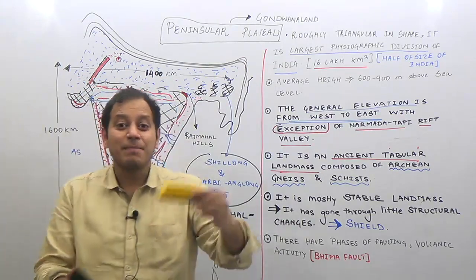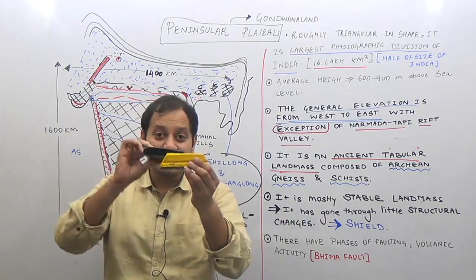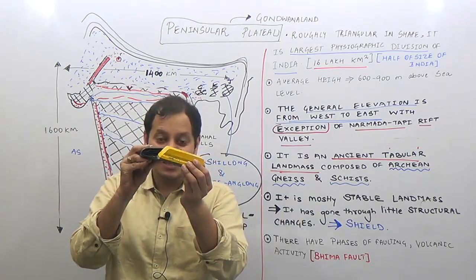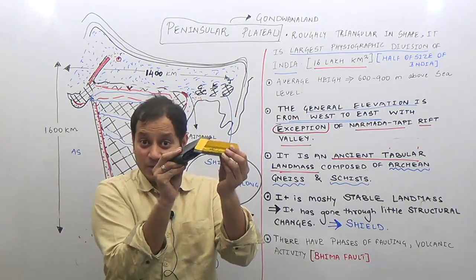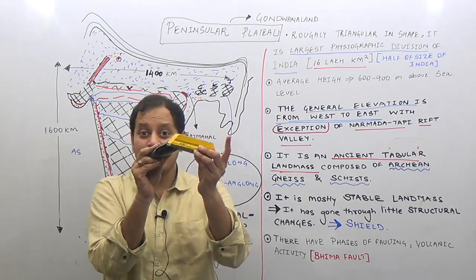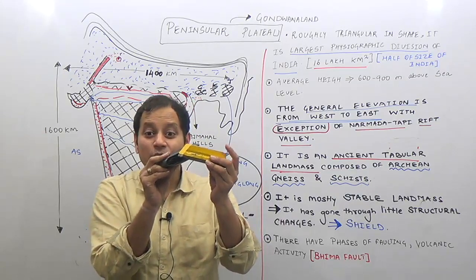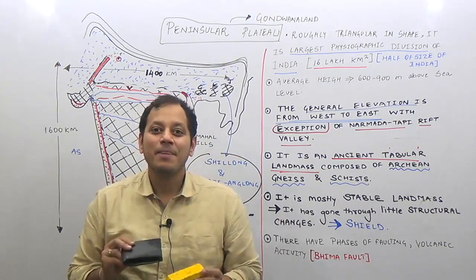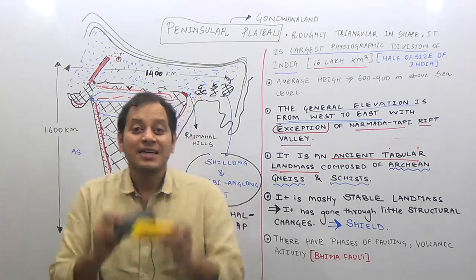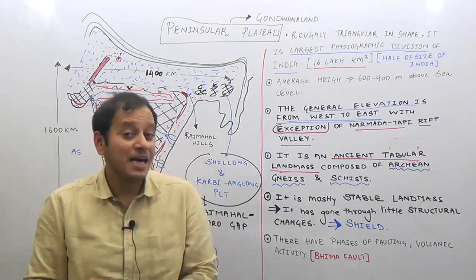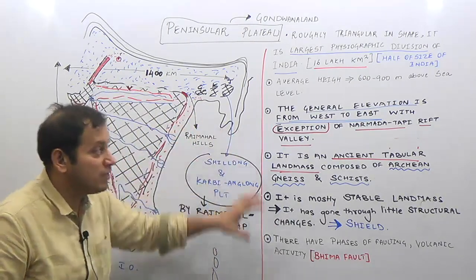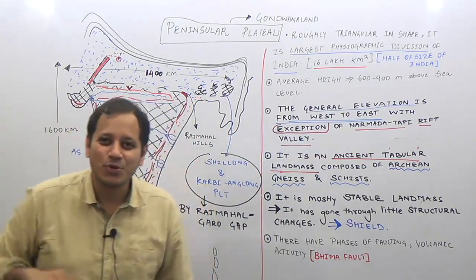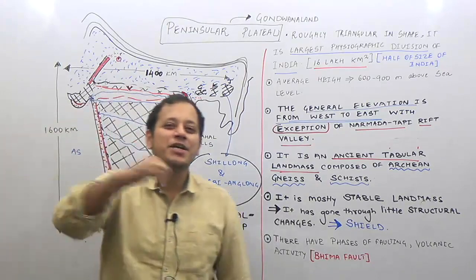So while the entire peninsular plateau tilts towards the east, the rift valley tilts towards the west. The general elevation is from west to east, except for the Narmada-Tapi rift valley — meaning Narmada and Tapi flow through a rift valley tilting towards the west.